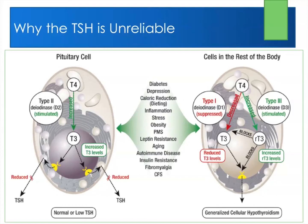So TSH goes down while the rest of the body's intracellular T3 level goes down. With all these chronic illnesses, in addition to activating deidinase type 2, they also activate deidinase type 3, which converts T4 to reverse T3. The pituitary doesn't have reverse T3. Reverse T3 then blocks the T3 receptor — it's a competitive inhibitor — blocks T4-to-T3 conversion, lowers metabolism, and does all those things.